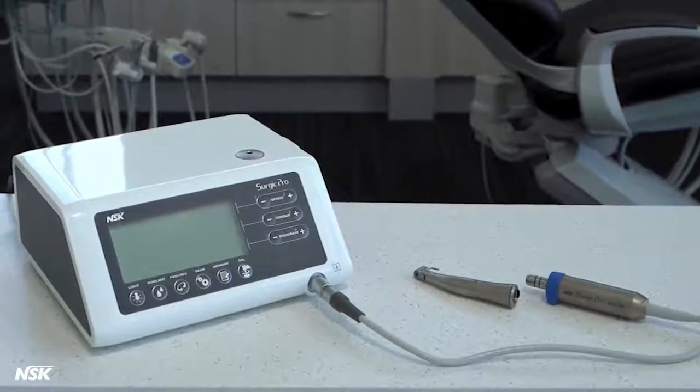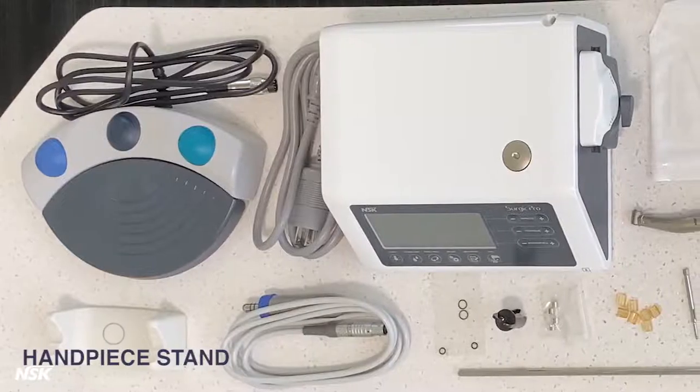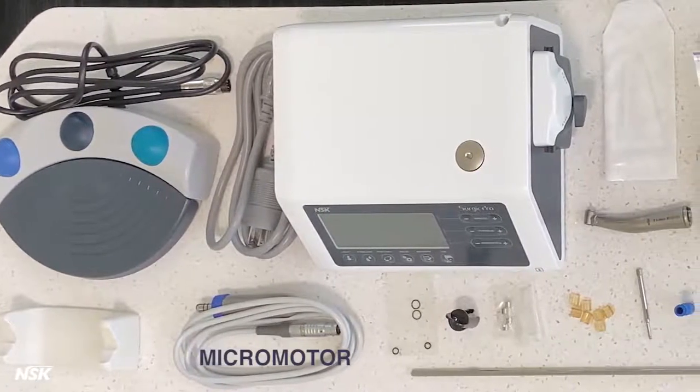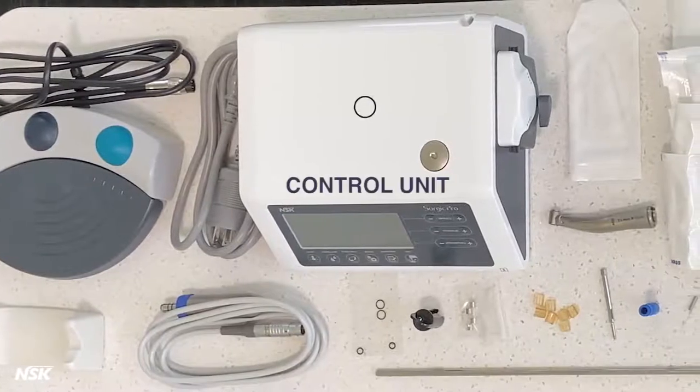Let's begin. Here's what you'll find inside the box: handpiece stand, foot control with cord, micromotor with cord, AC power cord, and control unit.